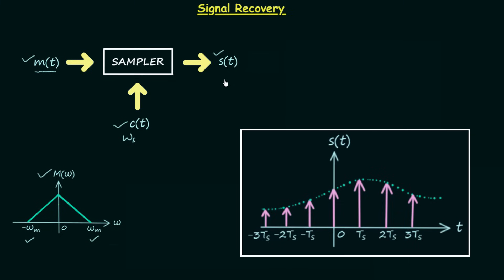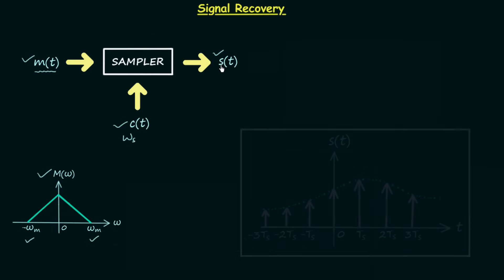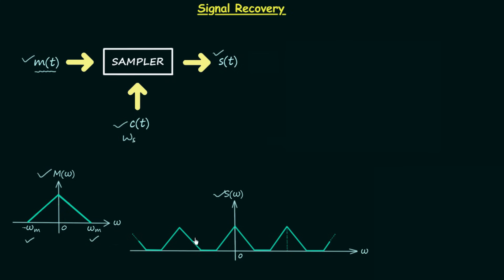In the first lecture of the sampling theorem, we obtained the Fourier transform of the sampled signal. The Fourier transform S(ω) looks like this waveform on screen — you can see that the spectrum is repeated: we have the original spectrum, and then the same spectrum shifted towards the right is added, and similarly the spectrum shifted towards the left is added. In this way we have obtained the waveform of S(ω), which was derived in detail in the first lecture.